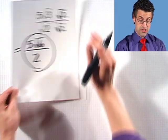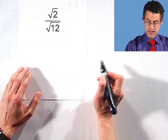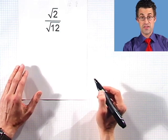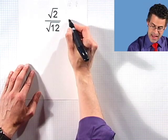And that's really useful, especially in an area of math called calculus. Let's take a look at this example here. Square root of 2 divided by the square root of 12. How would you handle that?